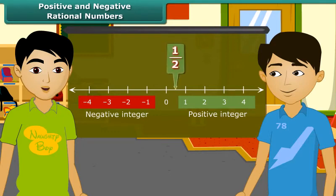Let's mark 1 by 2 on this line. 1 by 2 will lie in between 1 and 0, and minus 1 by 2 will lie in between 0 and minus 1.